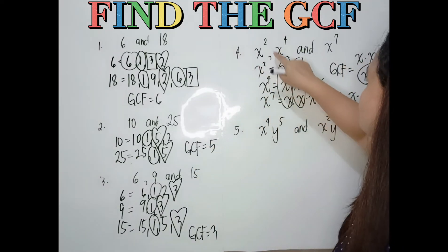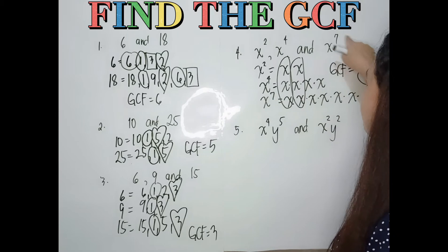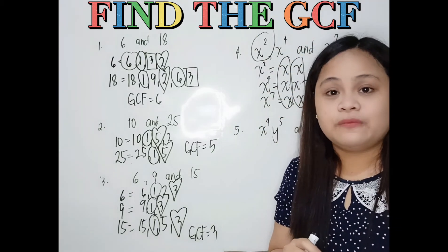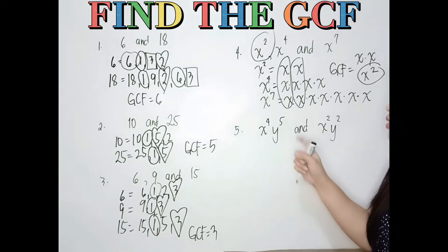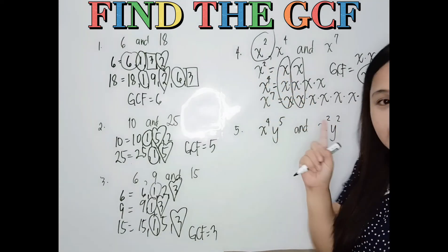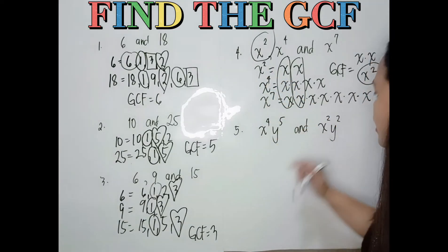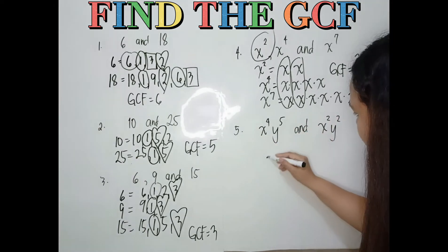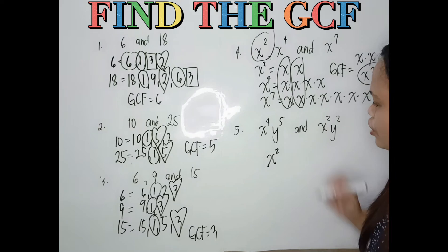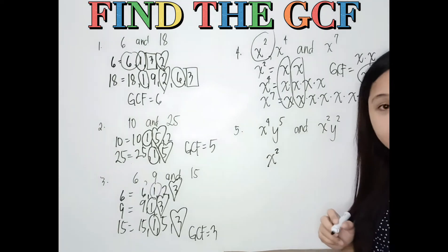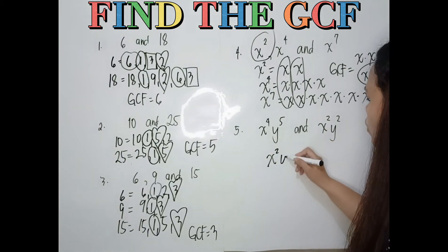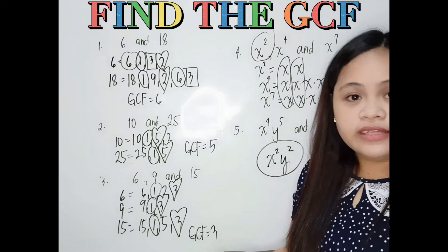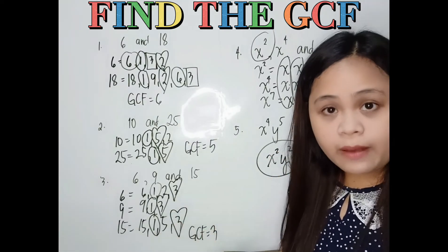For the next example with both x and y variables, we're going to use x to the power of 2 and y to the power of 2 as the GCF, since those have the lowest exponents respectively. So that's the GCF. That is how we can get the GCF of both numbers and variables.